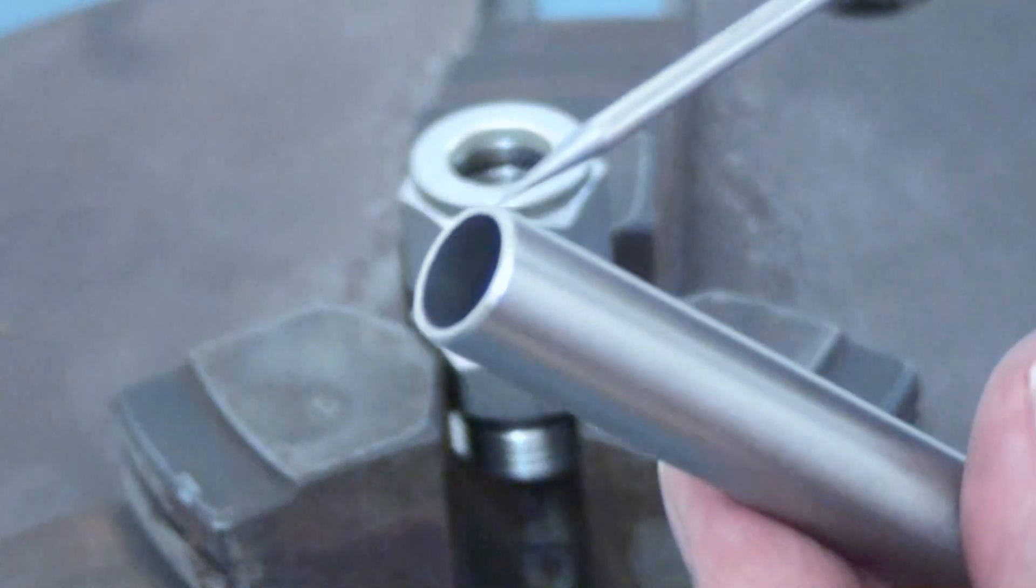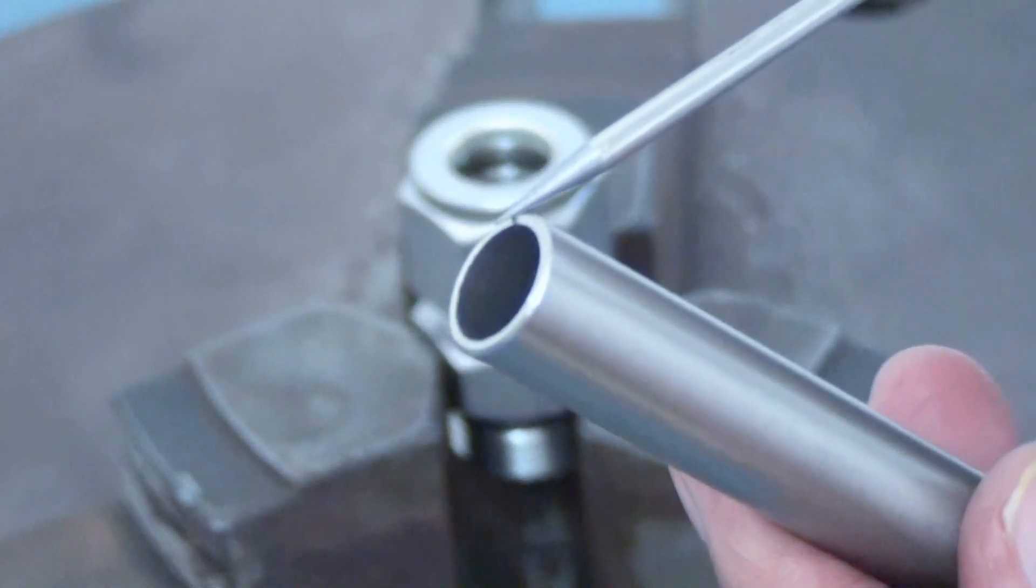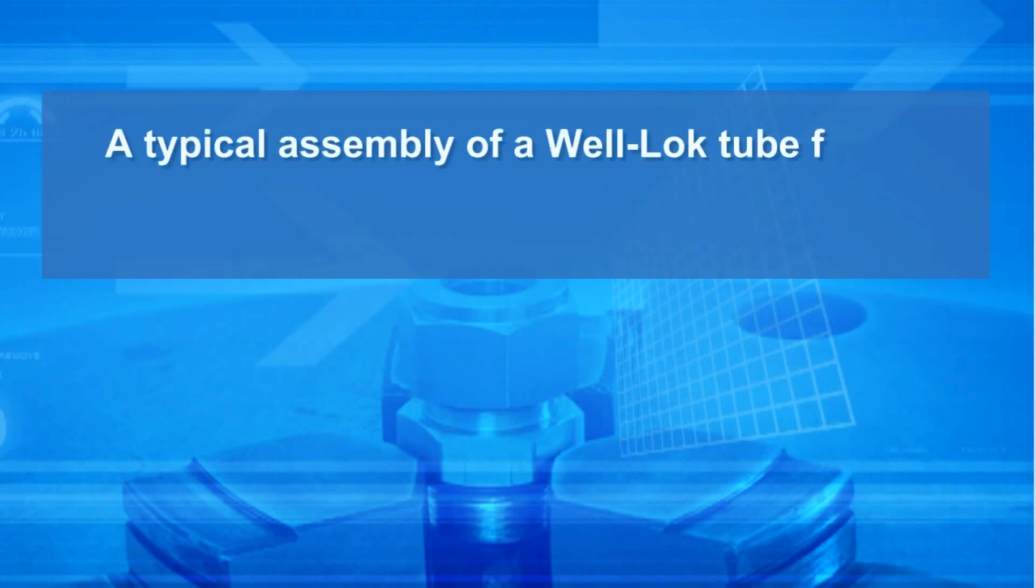Make sure that the tube is free of burrs and scratches. A typical assembly of a Well-Lock Tube Fitting can be done in three easy steps.